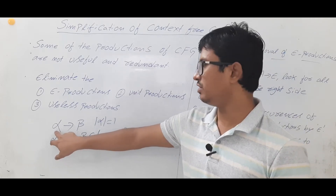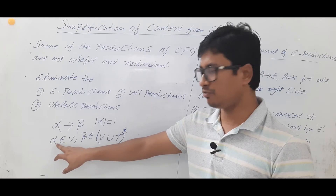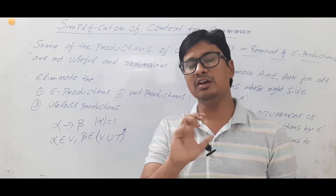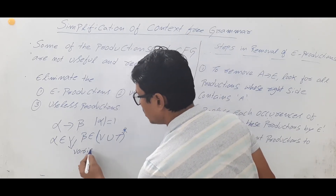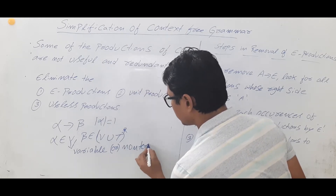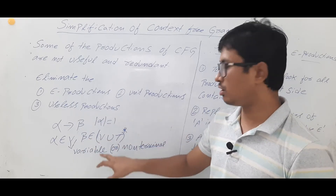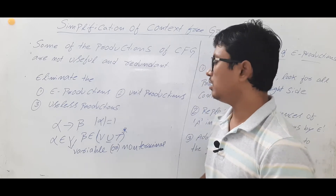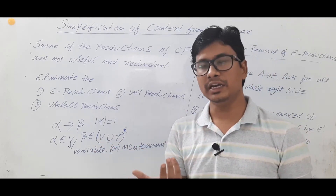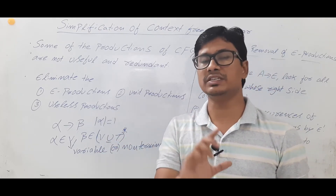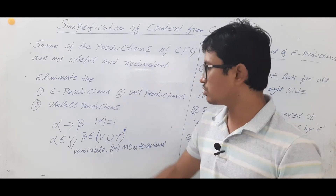A context-free grammar is represented in the form of alpha determines beta. Any grammar consists of a left-hand side symbol and a right-hand side symbol. In a Type 2 grammar, alpha consists of a single non-terminal (also called a variable), so the length of alpha is equal to 1. Beta can consist of a variable, a terminal, or epsilon — meaning beta can be a combination of variables and terminals of any length, including epsilon.